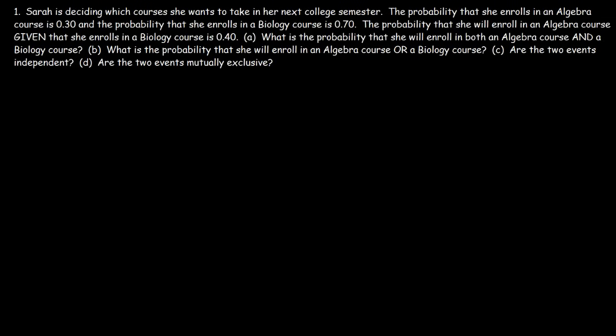Now let's put this information to good use. Sarah is deciding which courses she wants to take in her next college semester. The probability that she enrolls in an algebra course is 0.30, and the probability that she enrolls in a biology course is 0.70. The probability that she will enroll in an algebra course given that she enrolls in a biology course is 0.40. Part A: what is the probability that she will enroll in both an algebra course and a biology course?